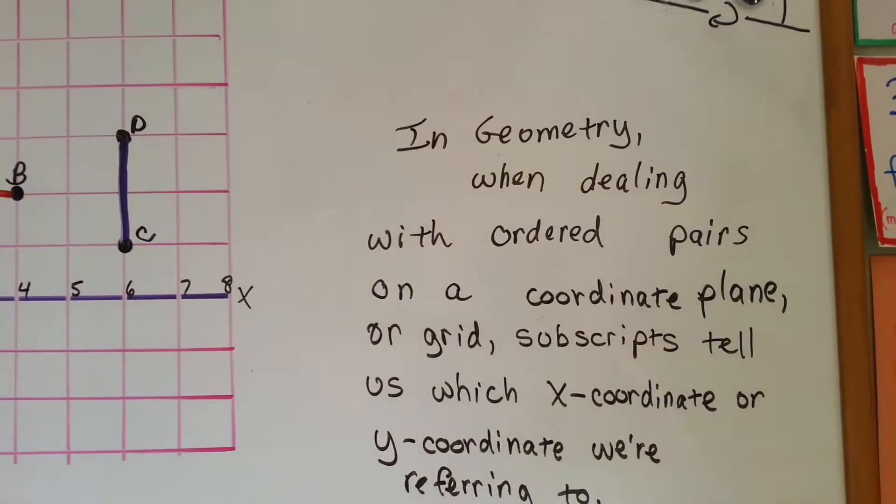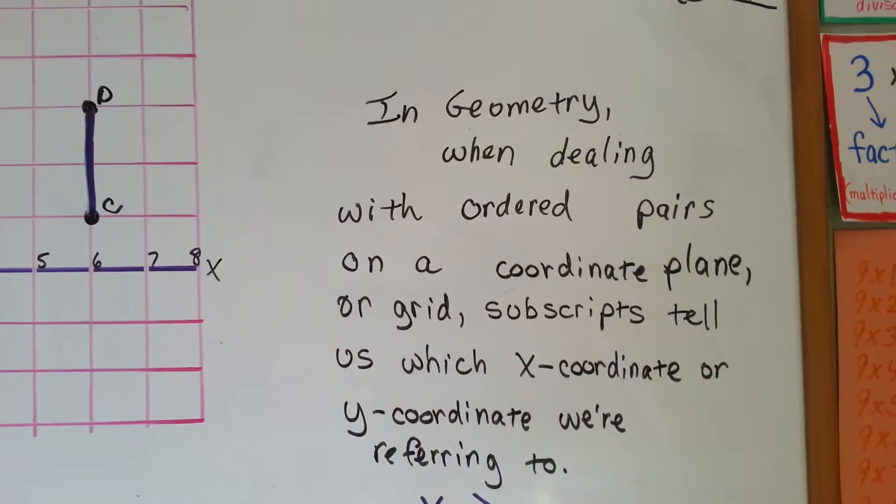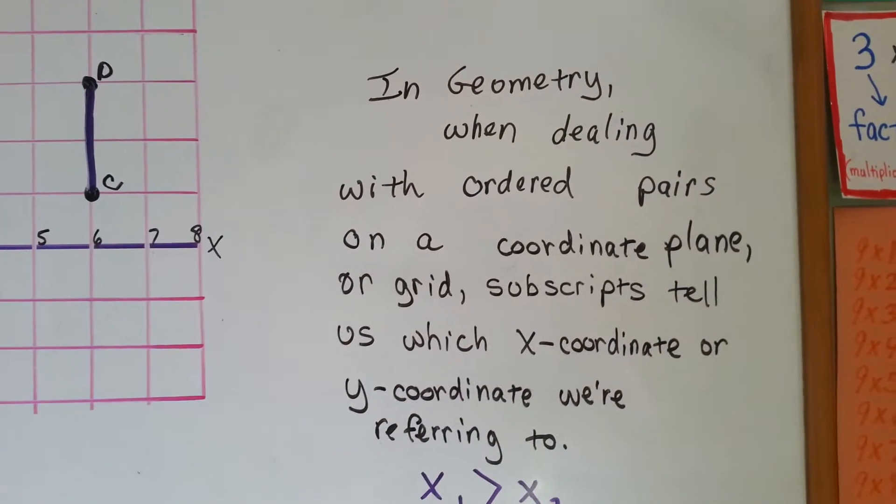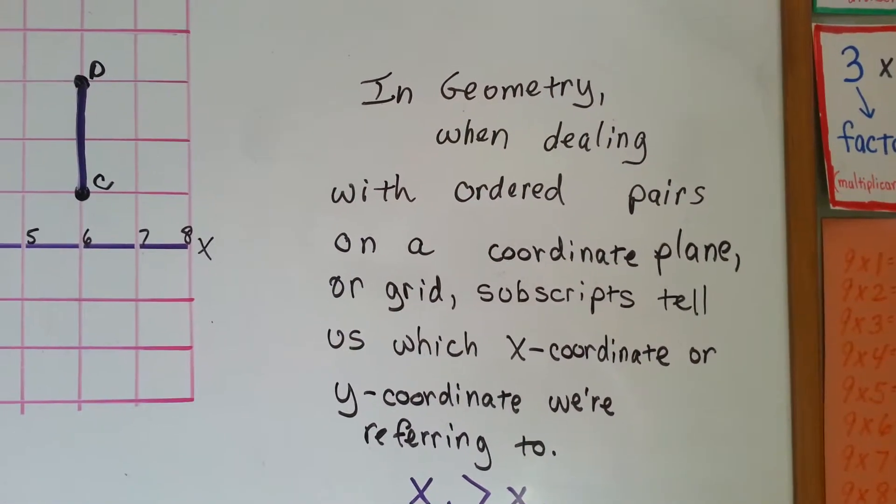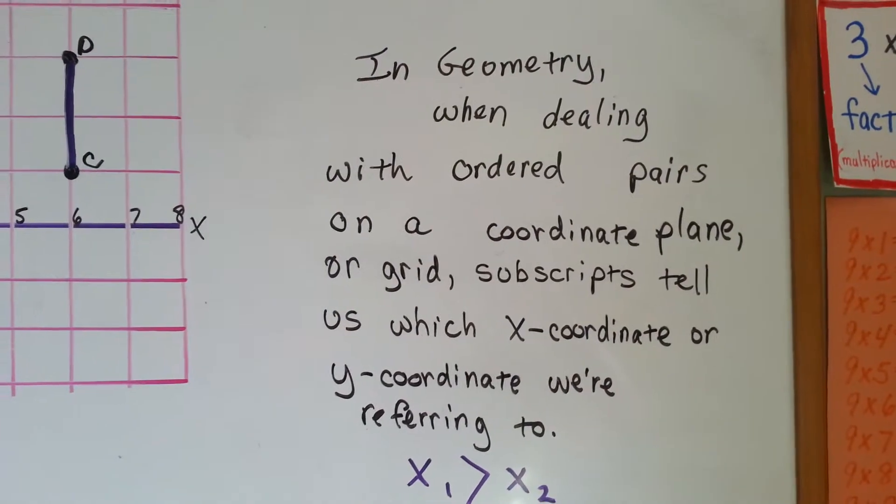So why do we need to know this? In geometry, when dealing with ordered pairs on a coordinate plane or grid, subscripts tell us which x-coordinate or y-coordinate we're referring to.